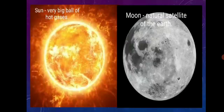Let us observe the two images. The first image shows us the sun. The sun is a very big ball of hot gases. It is also called the star closest to the earth. It has its own light and heat.